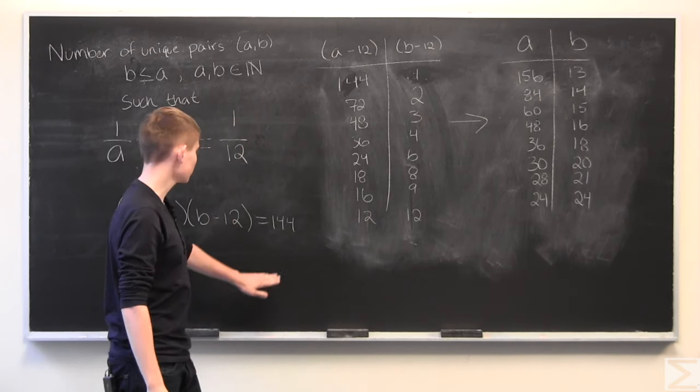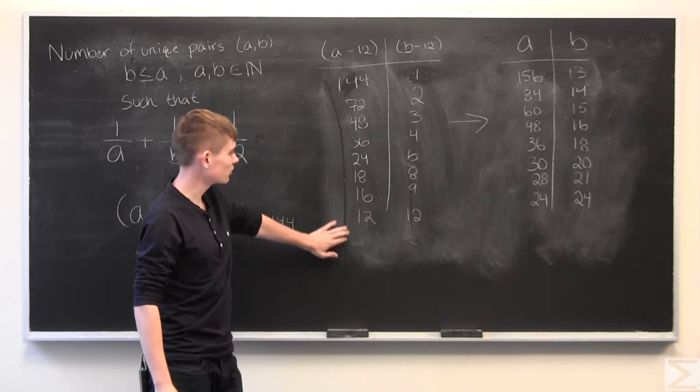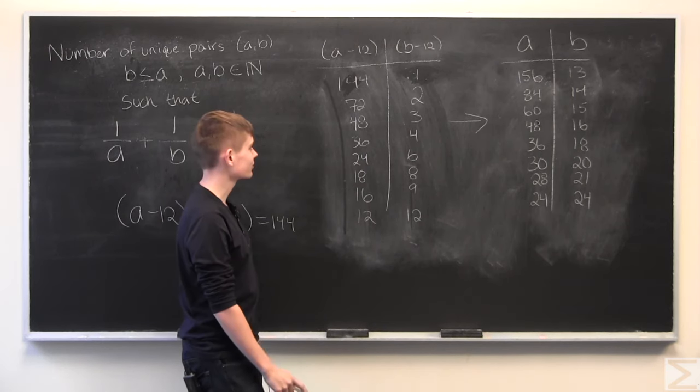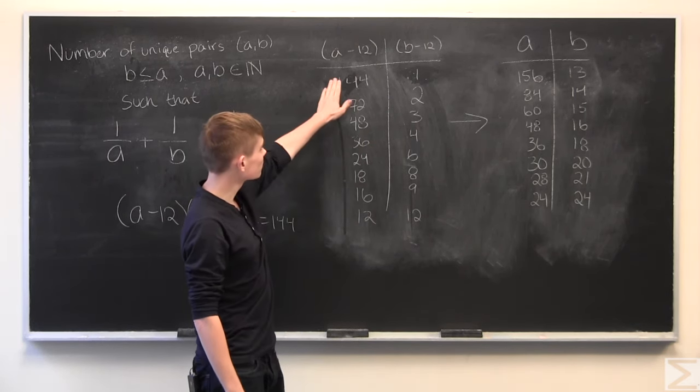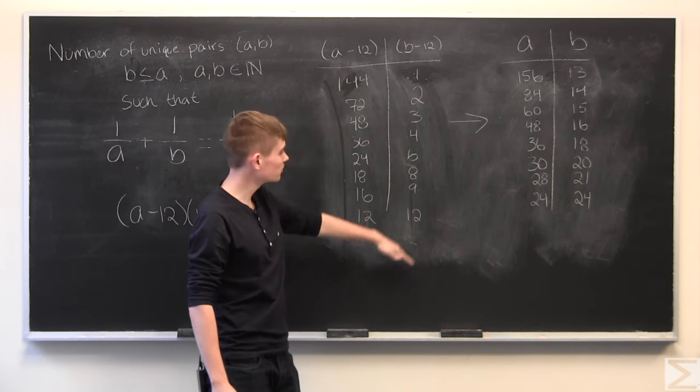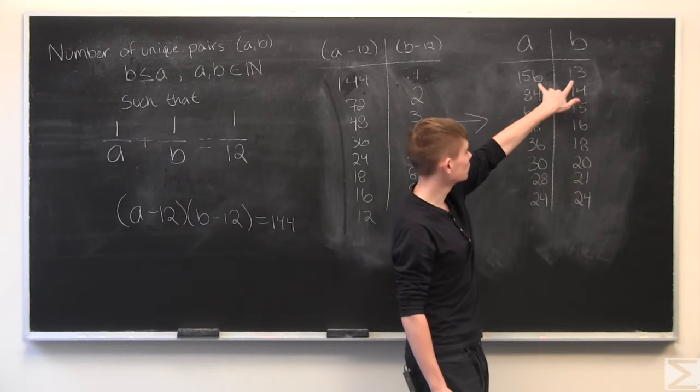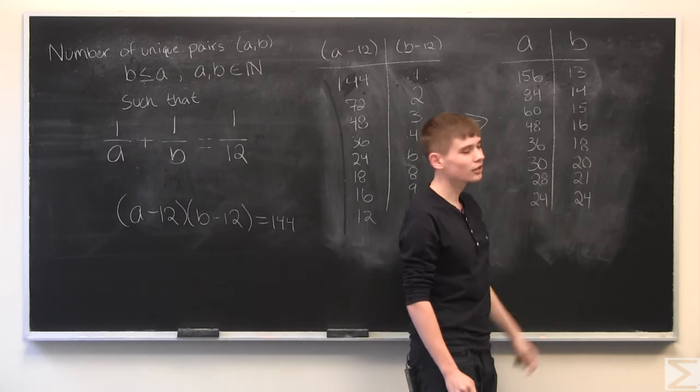Okay, so what I have done is I've taken 144 and broken it up into its different factors. And then from there, I have a column of a minus 12 and a column of b minus 12. And what I've done is just added 12 to each side to arrive at values for a and b.